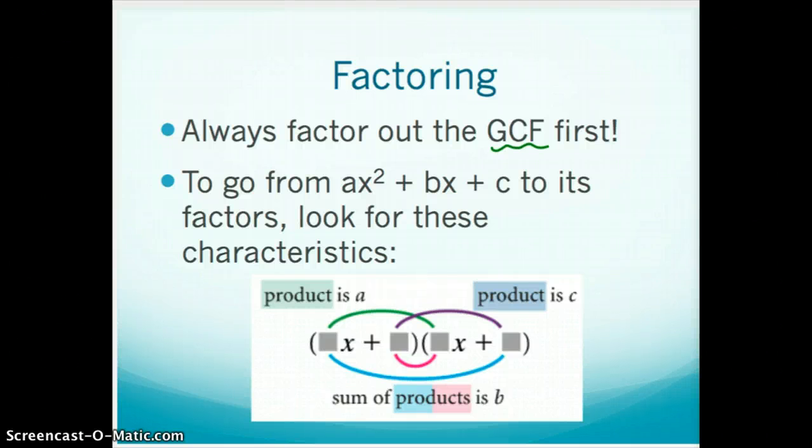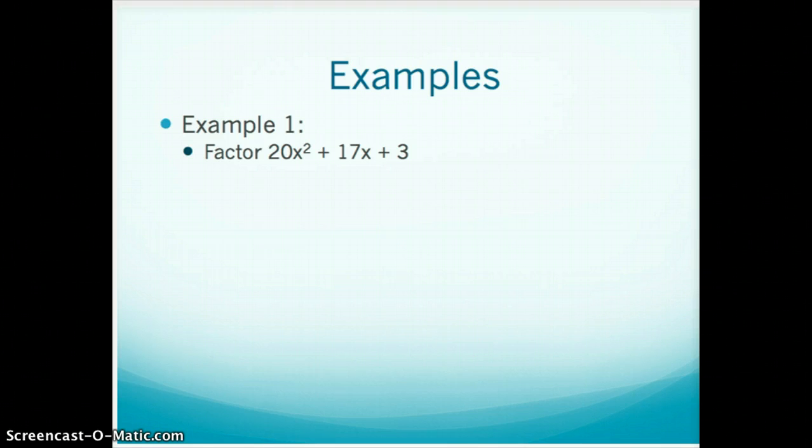When you're going from ax squared plus bx plus c to its factors, look for these characteristics. The product of these first two terms is going to be a. The product of these last two terms will be c. And the sum of the products of the outer and inner terms will be b. So when we're looking for it and I say, hey, factor this, 20x squared plus 17x plus 3,